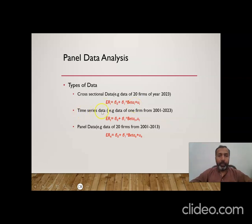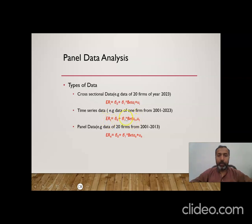The second type is time series data. In time series data we have one cross-sectional unit but the year changes. For example, data of one firm from 2001 to 2023, or GDP of Pakistan from 2001 to 2023 — years are 23 while the country is one. When its equation is written, subscript t is written with the dependent variable as well as with the independent variable. These subscripts indicate whether it is cross-sectional, time series, or panel data.